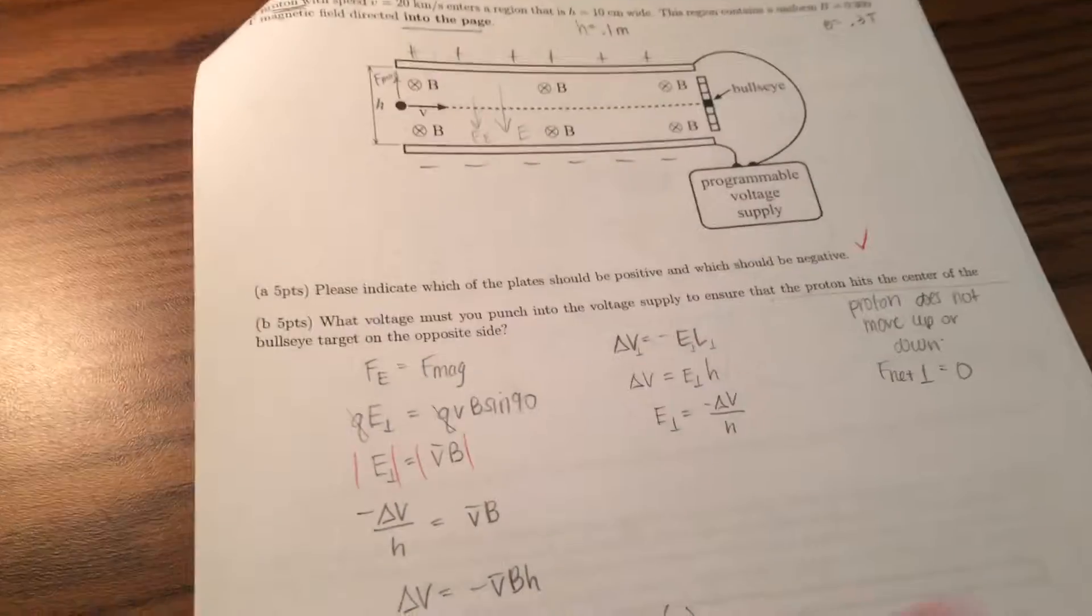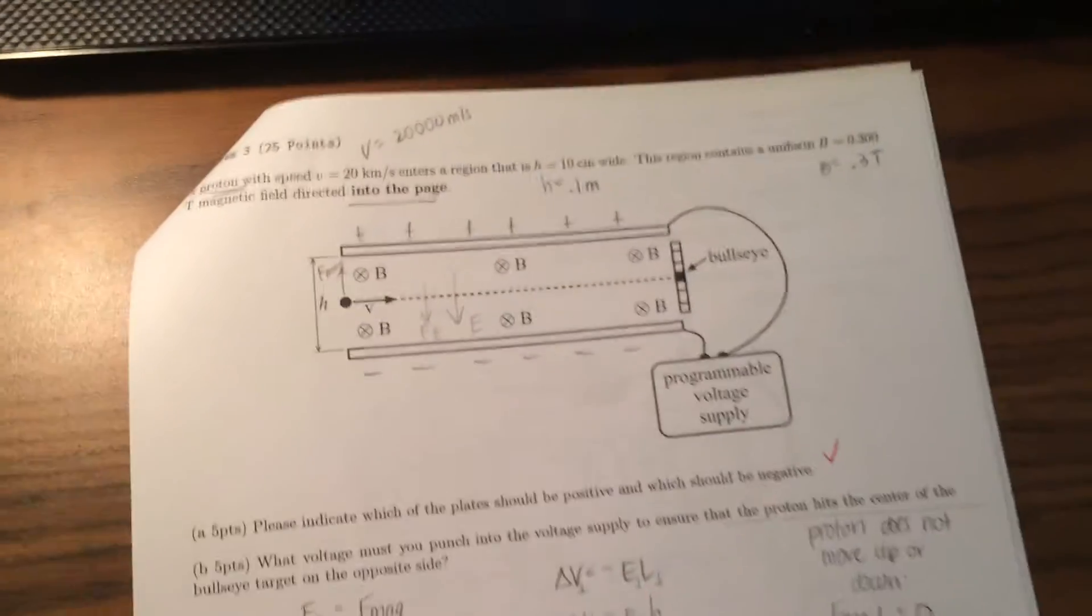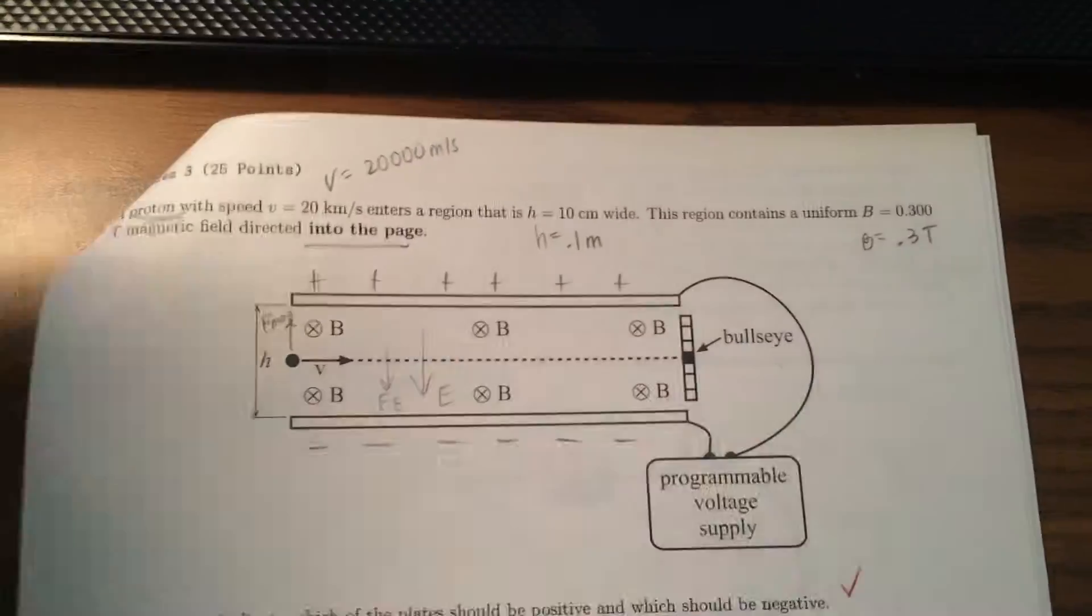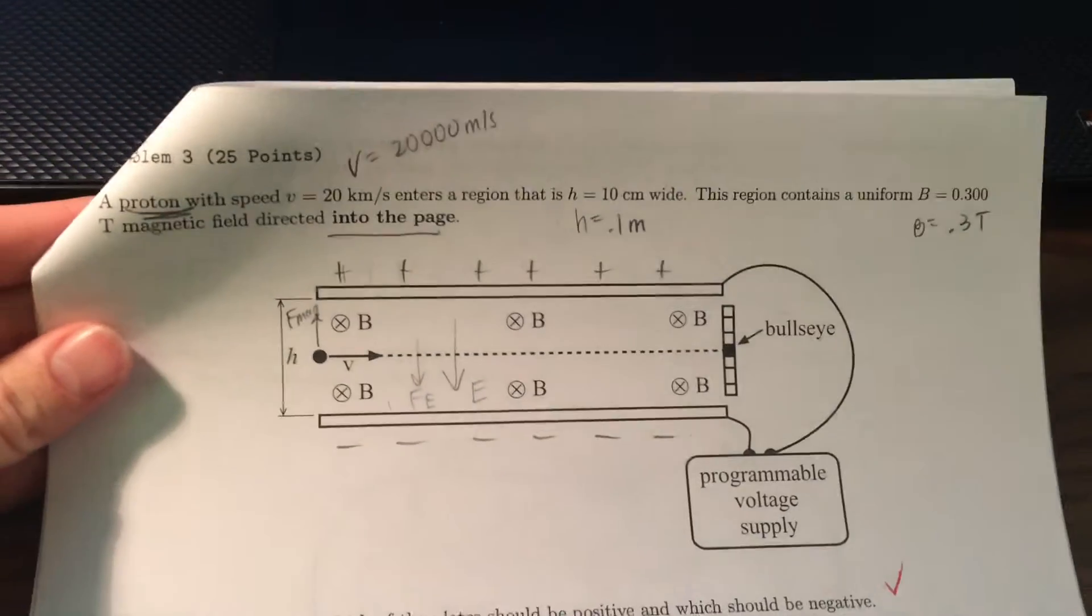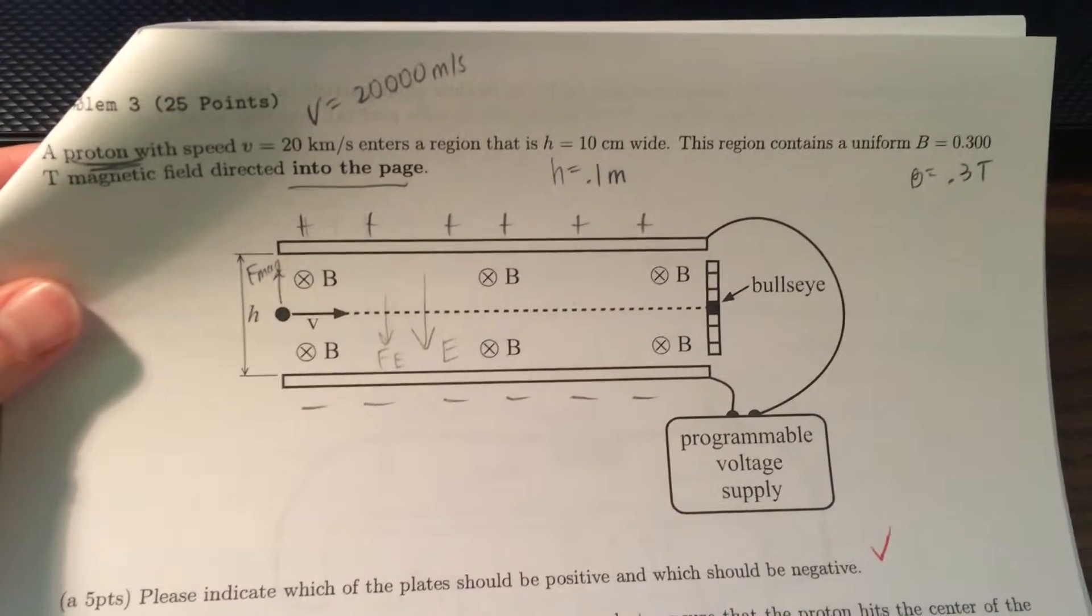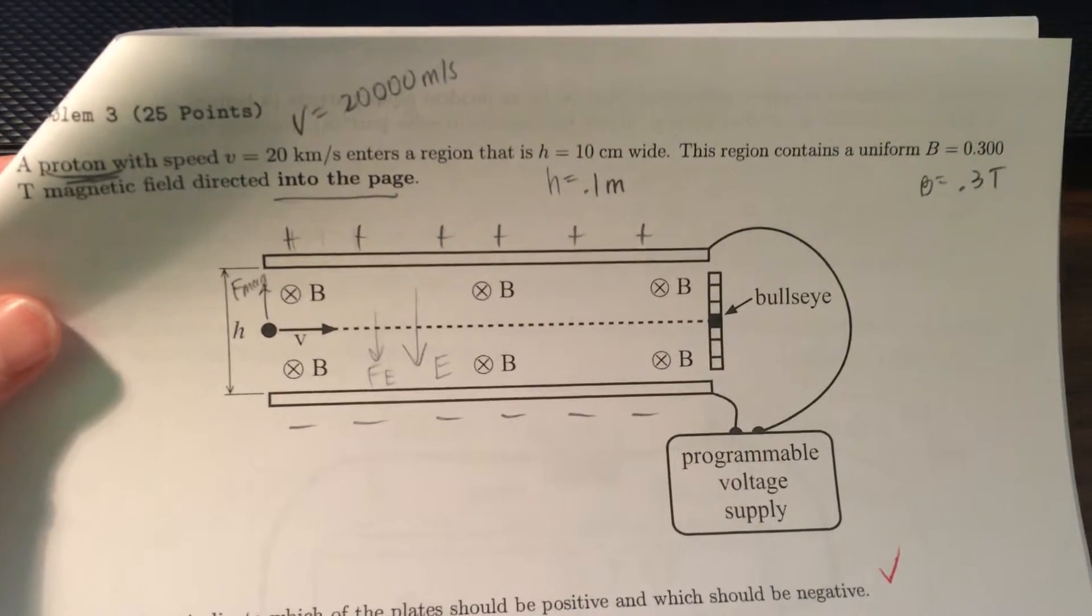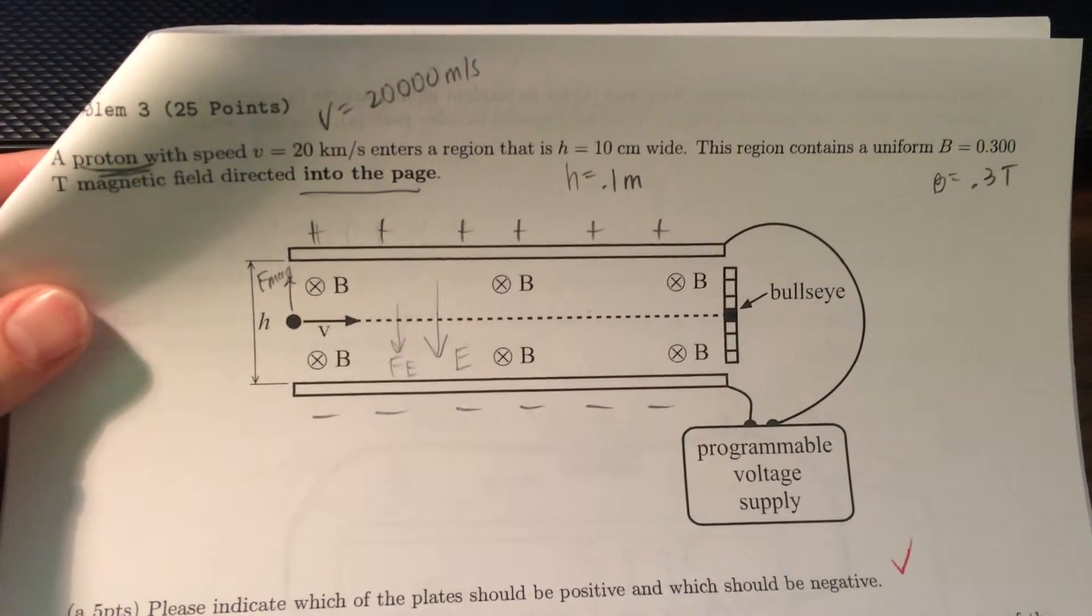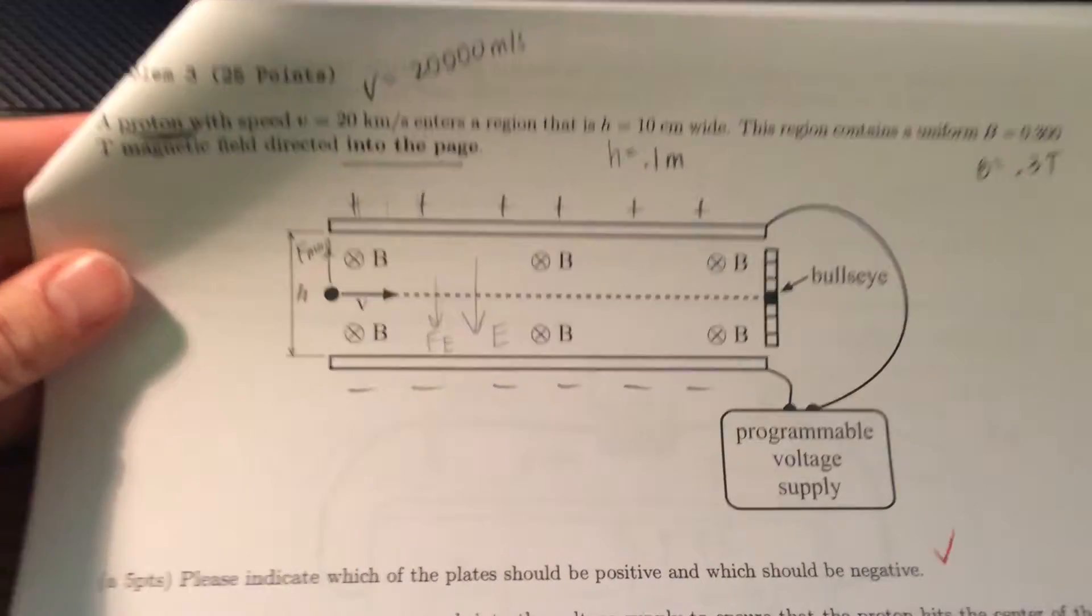But I'll go over the whole question and explain what I did and what I did wrong and how I will fix it. So the question is, a proton with speed v equals 20 kilometers per second enters a region that is h equals 10 centimeters wide. This region contains a uniform b equals 0.3 tesla magnetic field directed into the page.